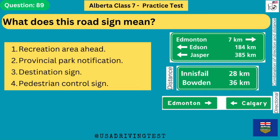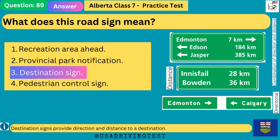What does this road sign mean? 1. Recreation area ahead. 2. Provincial park notification. 3. Destination sign. 4. Pedestrian control sign. The answer is 3: destination sign. Destination signs provide direction and distance to a destination.